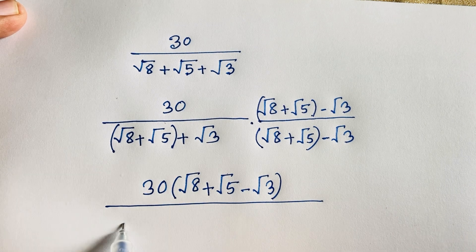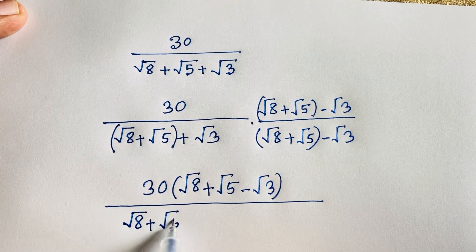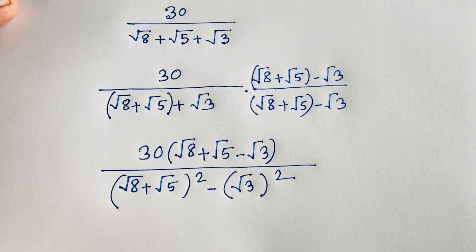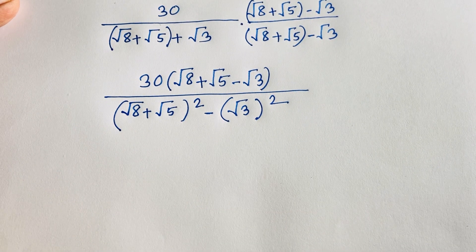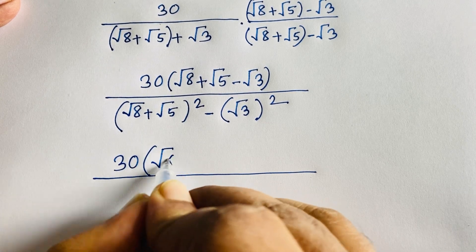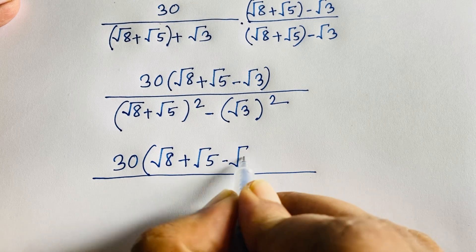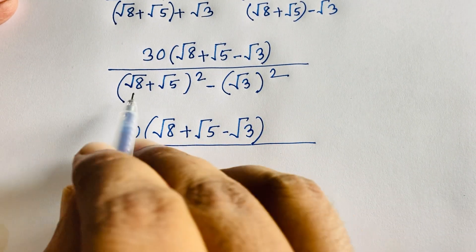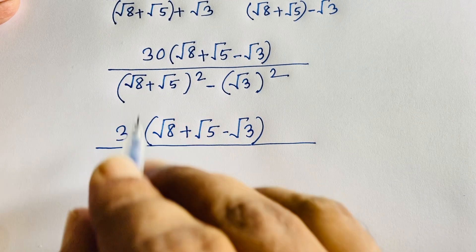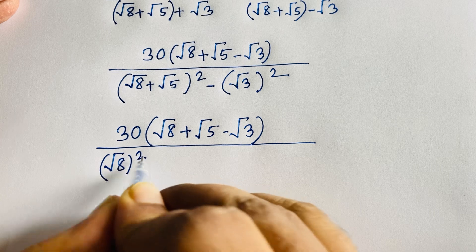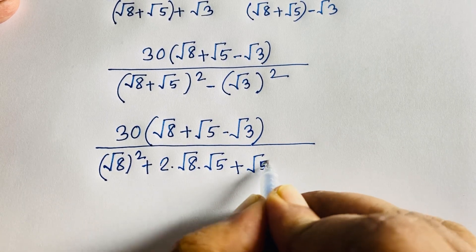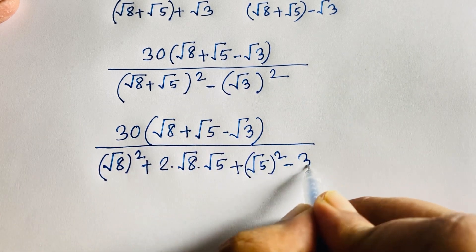So the denominator becomes (√8 + √5) whole squared minus (√3) whole squared. Expanding using the identity (a+b)² = a² + 2ab + b², we get: √8 whole squared plus 2 times √8 times √5 plus √5 whole squared, minus √3 whole squared.